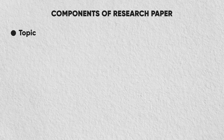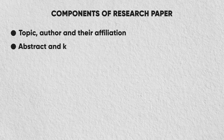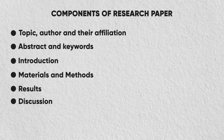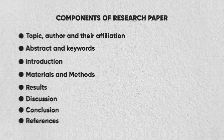So guys, these are the things that go in each section of the research paper. In summary, a good research paper includes: topic, authors and their affiliation, abstract and keywords, introduction, materials and methods, results, discussion, conclusion, and references. If you remember that, I'm sure you are going to write a good research paper.